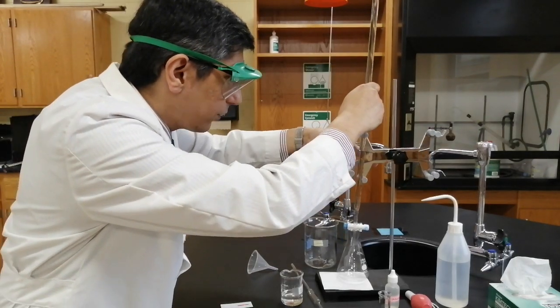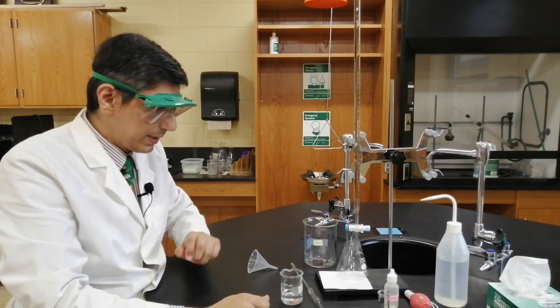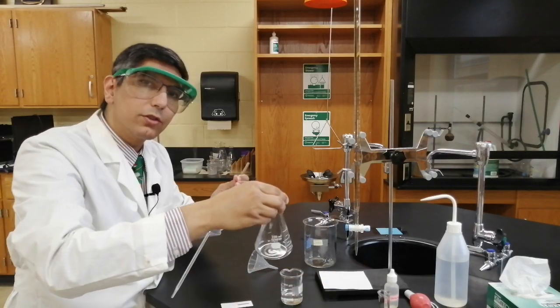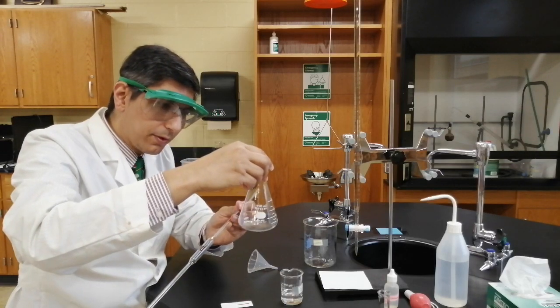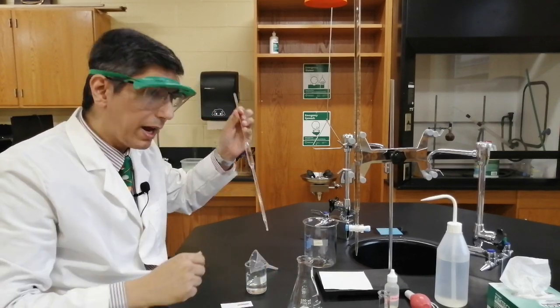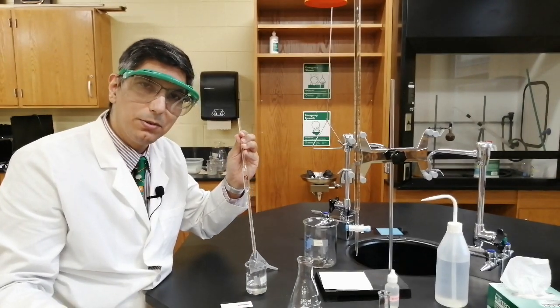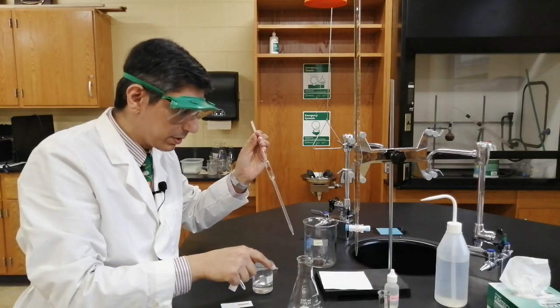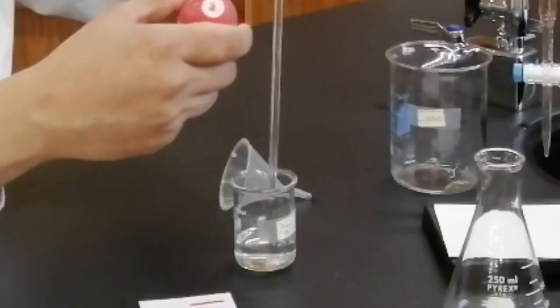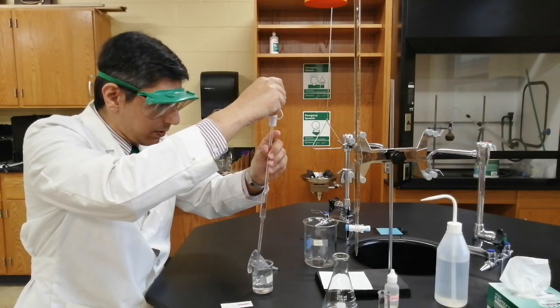And now the next thing we need to do is to dispense exactly 10 milliliters of acetic acid into this Erlenmeyer flask. This shape of the flask is called an Erlenmeyer flask. So I have some acetic acid here that's been dispensed and a pipette and a pipette bulb. Now this takes a little bit of practice to use a pipette and a pipette bulb to dispense a very precise amount of acid. But once you get some practice, you'll find it's not too difficult. You want to poke the end of this pipette down into the beaker.